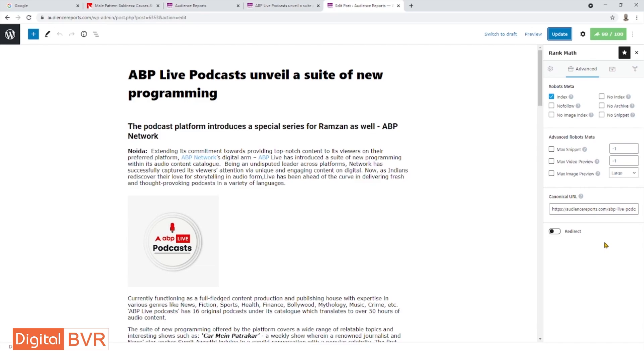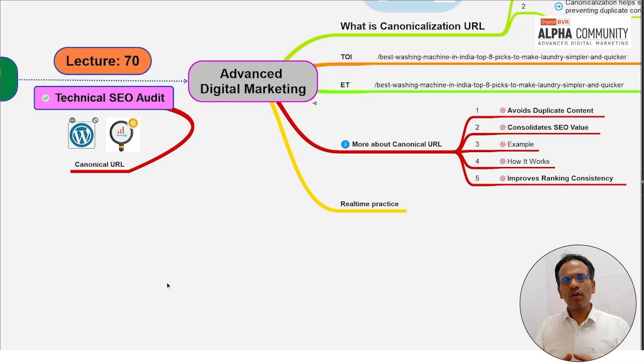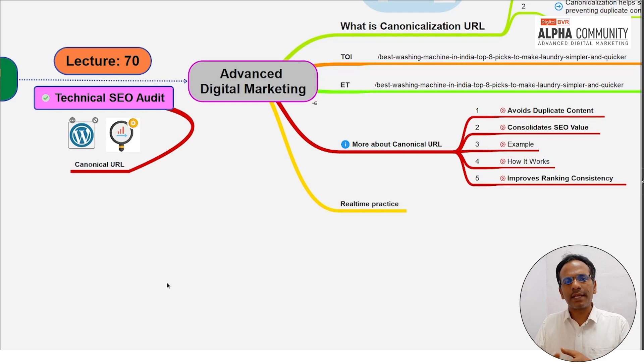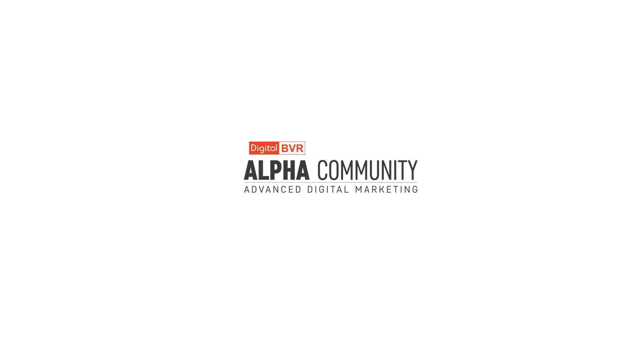This is all about the canonicalization URL. In the next technical SEO audit module, we will learn new things. Let's do the best practice with the Digital Beware Alpha community — all the best!